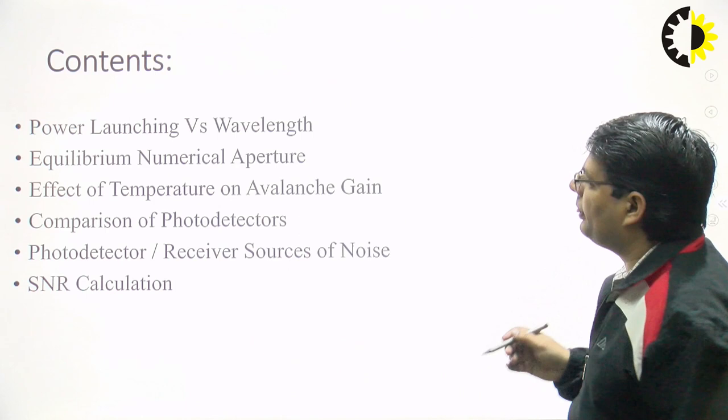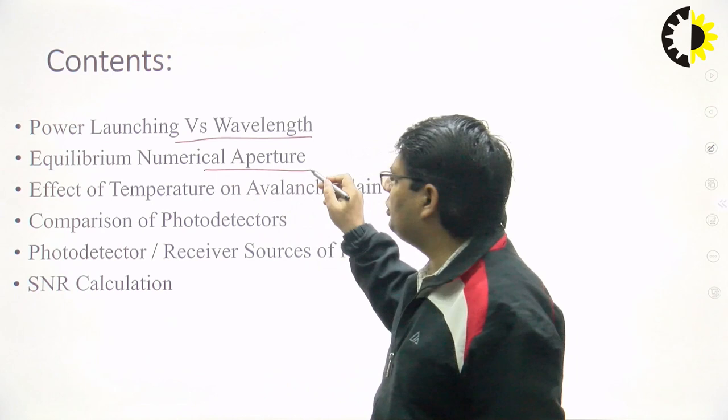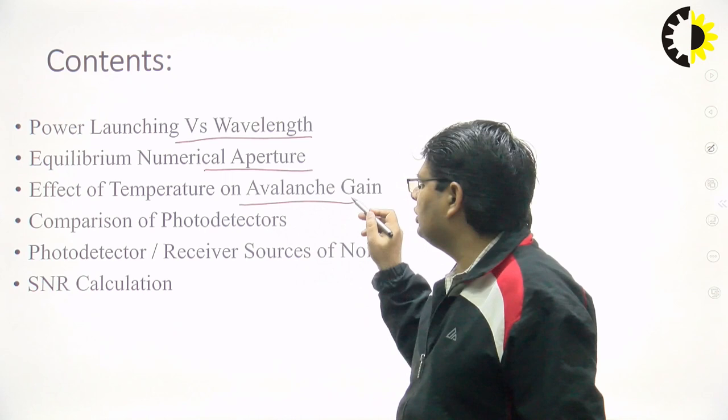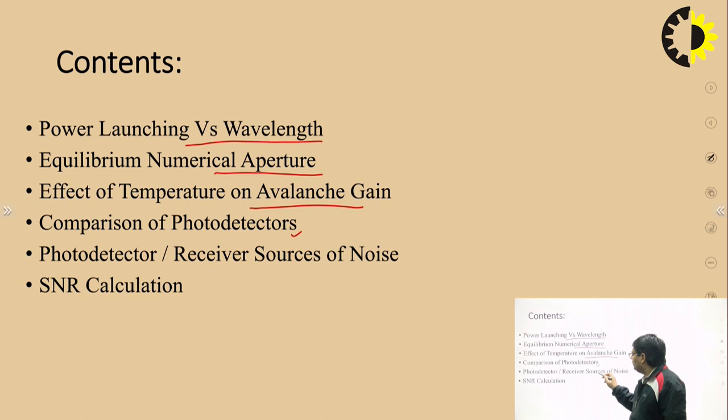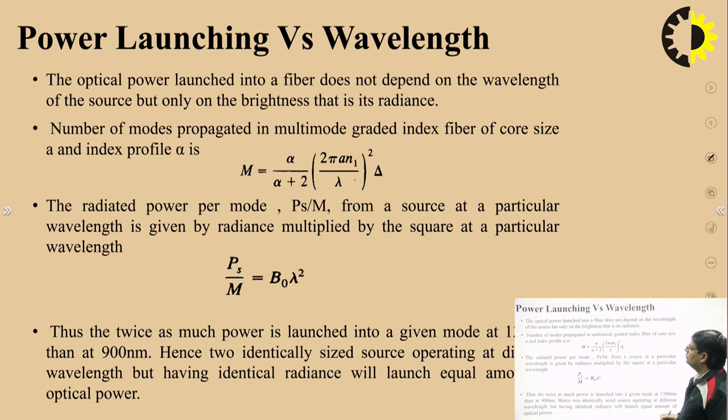The main contents for today's lecture are: power launching versus wavelength, the concept of equilibrium numerical aperture, the effect of temperature on the avalanche photodiode gain, sources of noise in the optical receiver or photodetector, and calculation of the signal to noise ratio for the receiver.